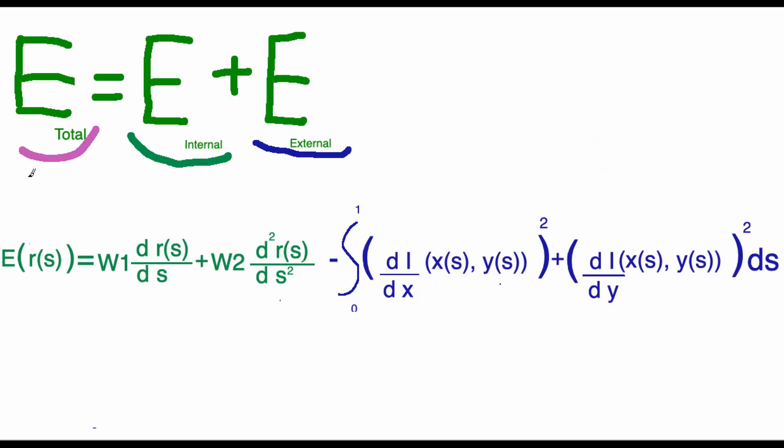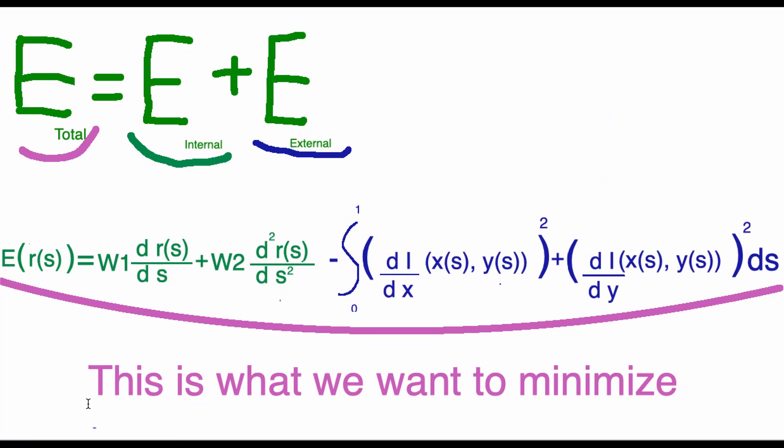You add the internal and external energies together to get the total energy, and that is what we want to minimize. When we reach a point in the iterations where the energy is not getting smaller anymore, we have basically found the perfect snake around our object — the perfect segmentation based on our criteria.